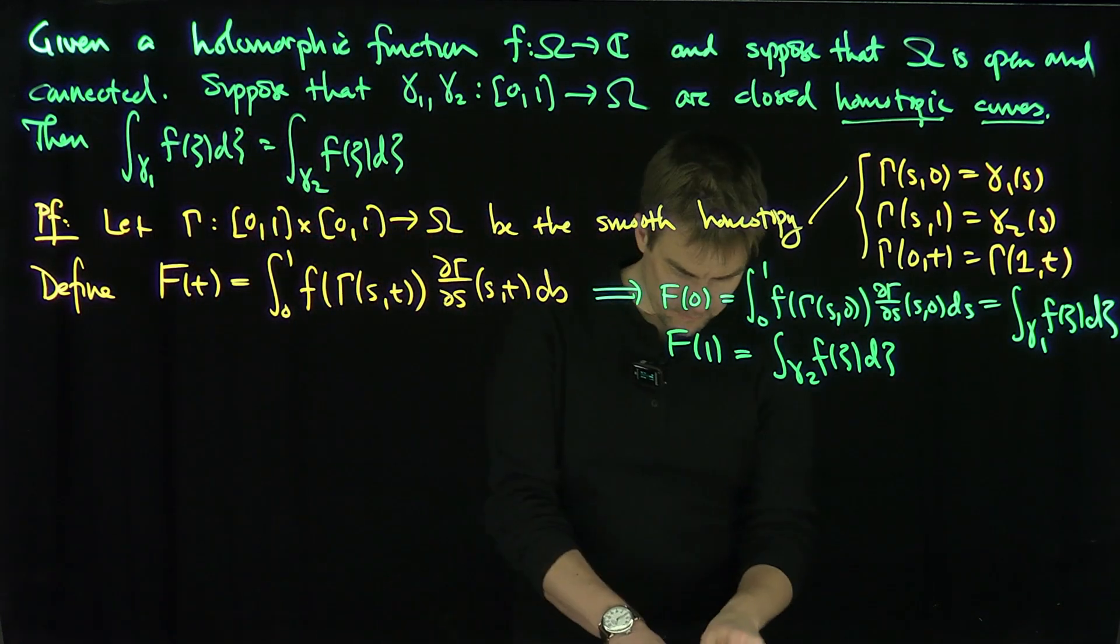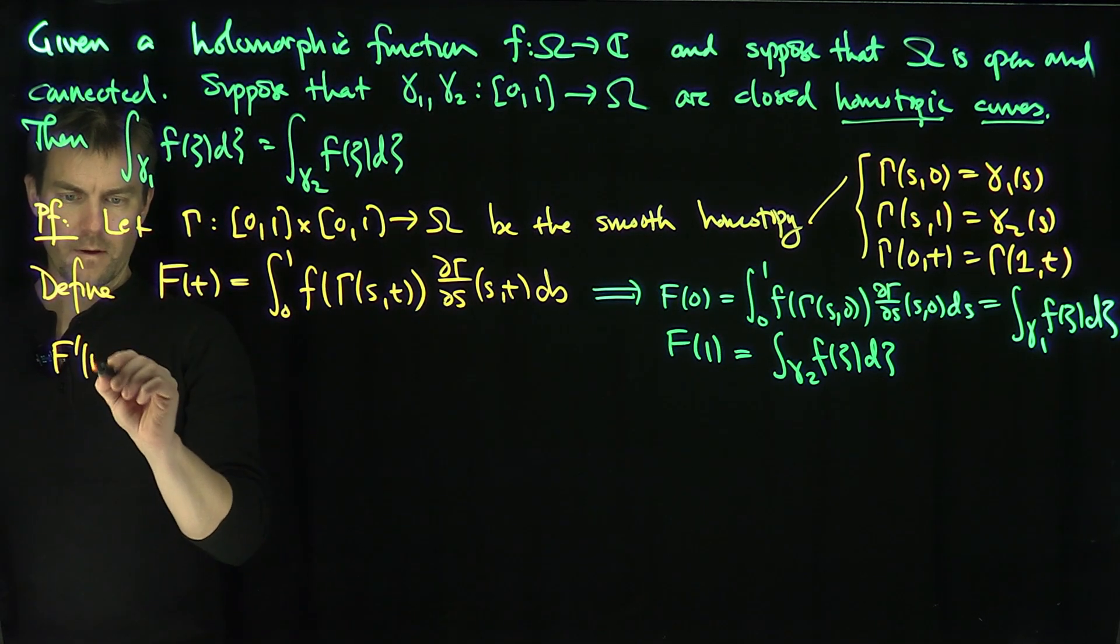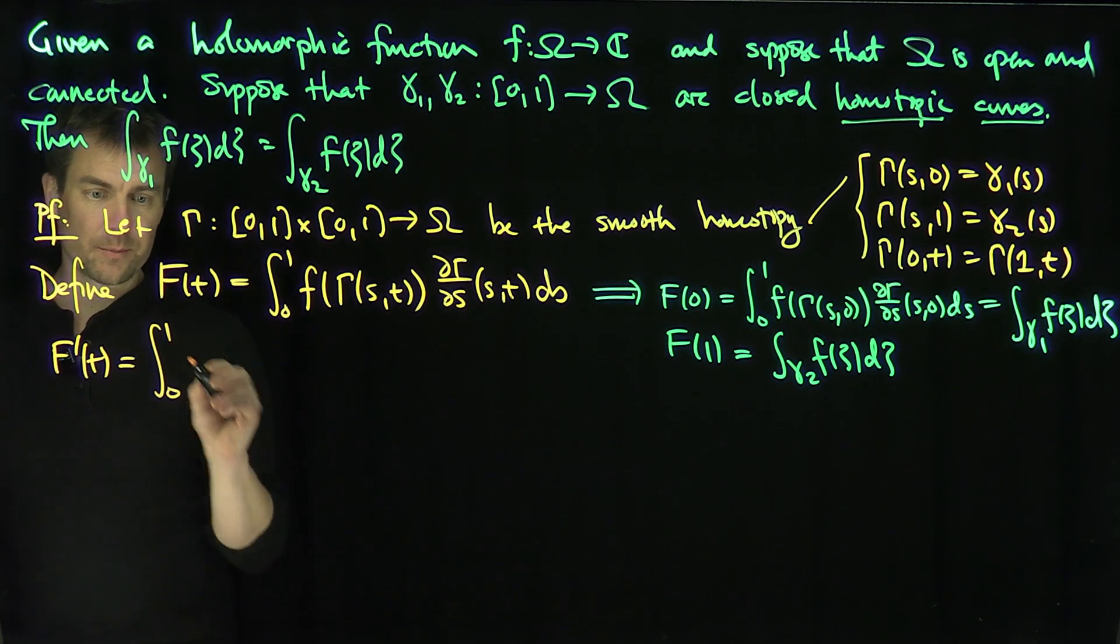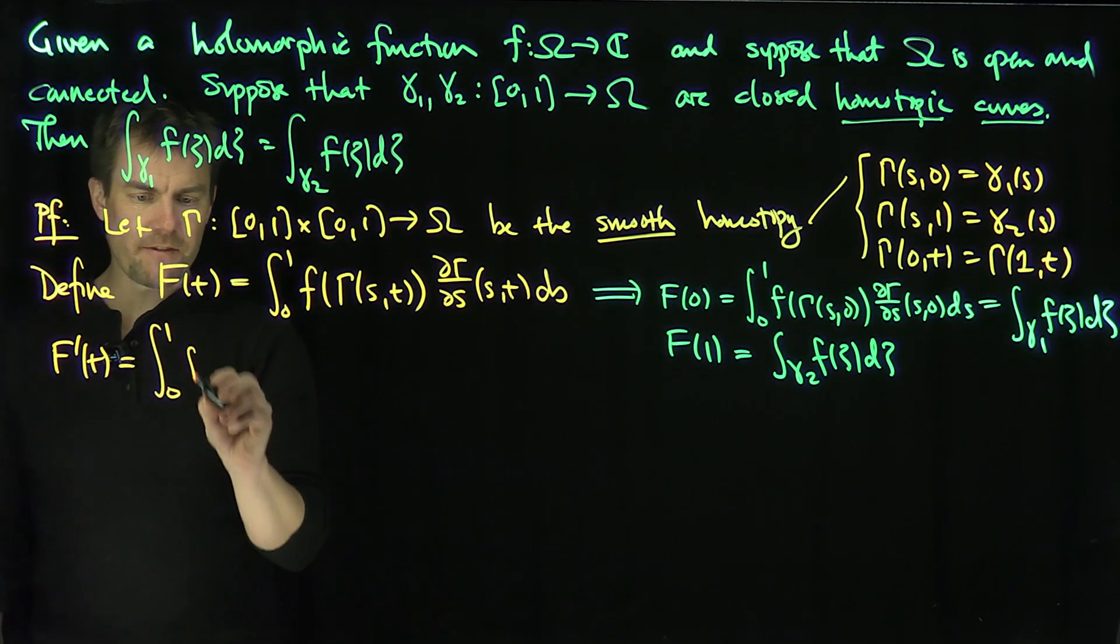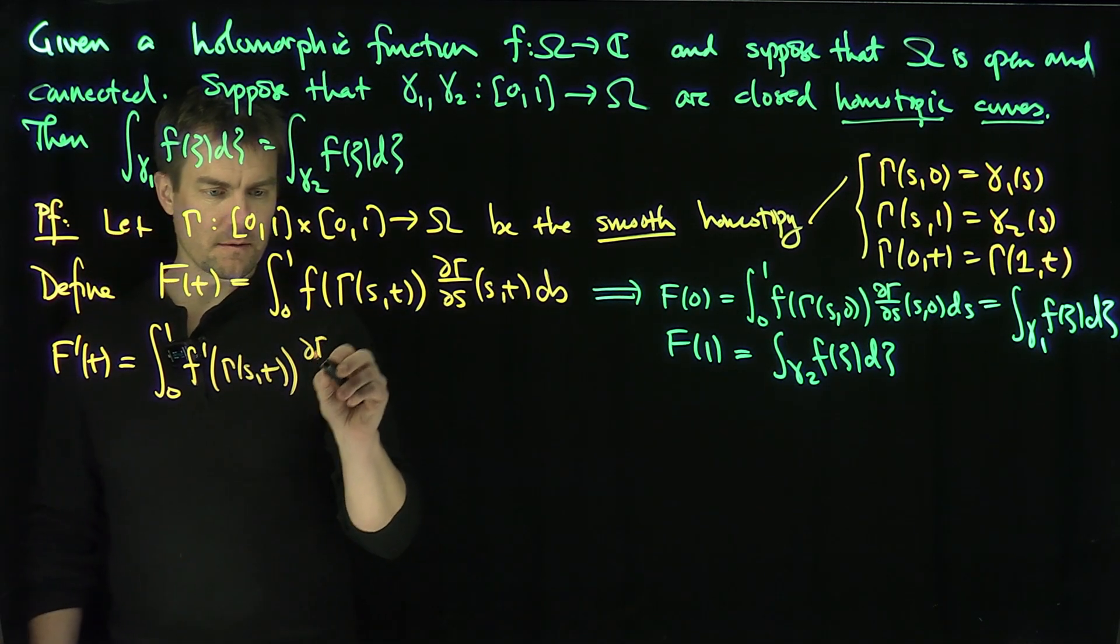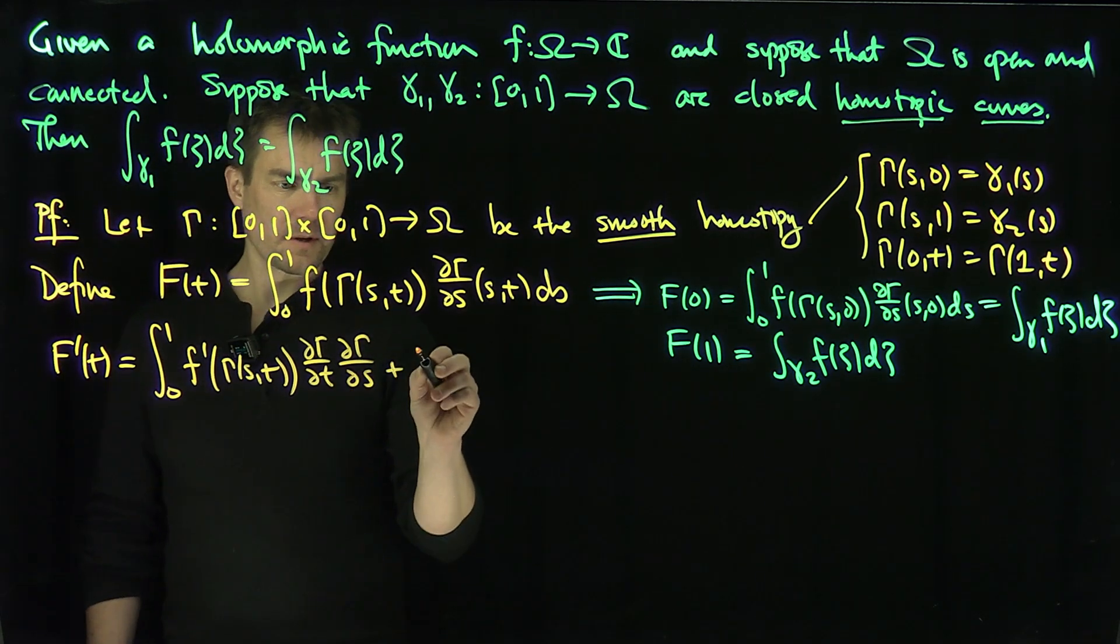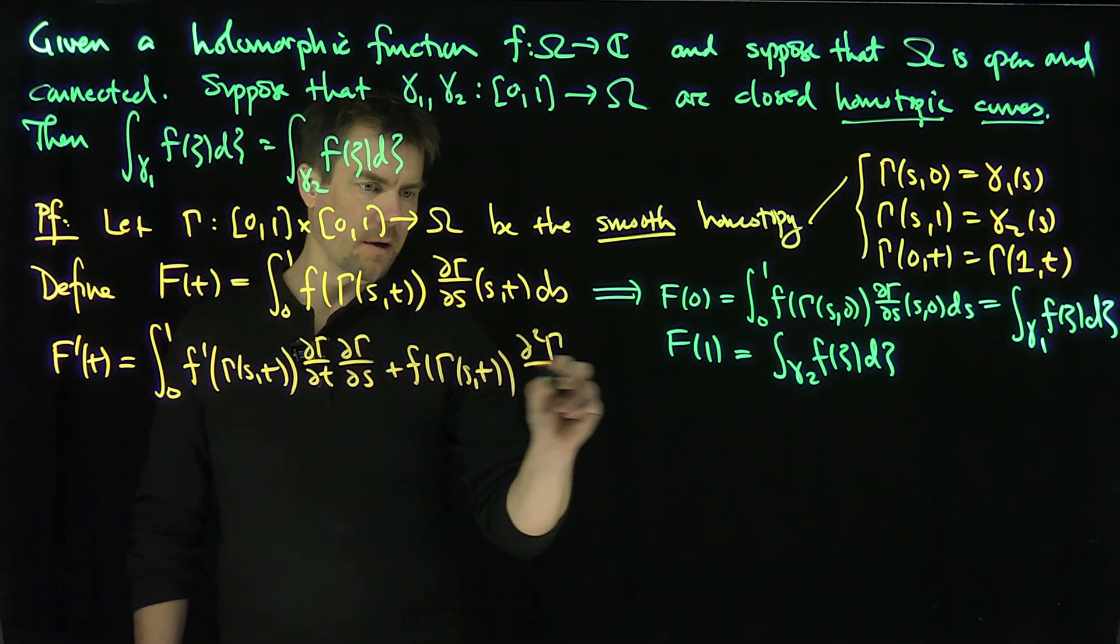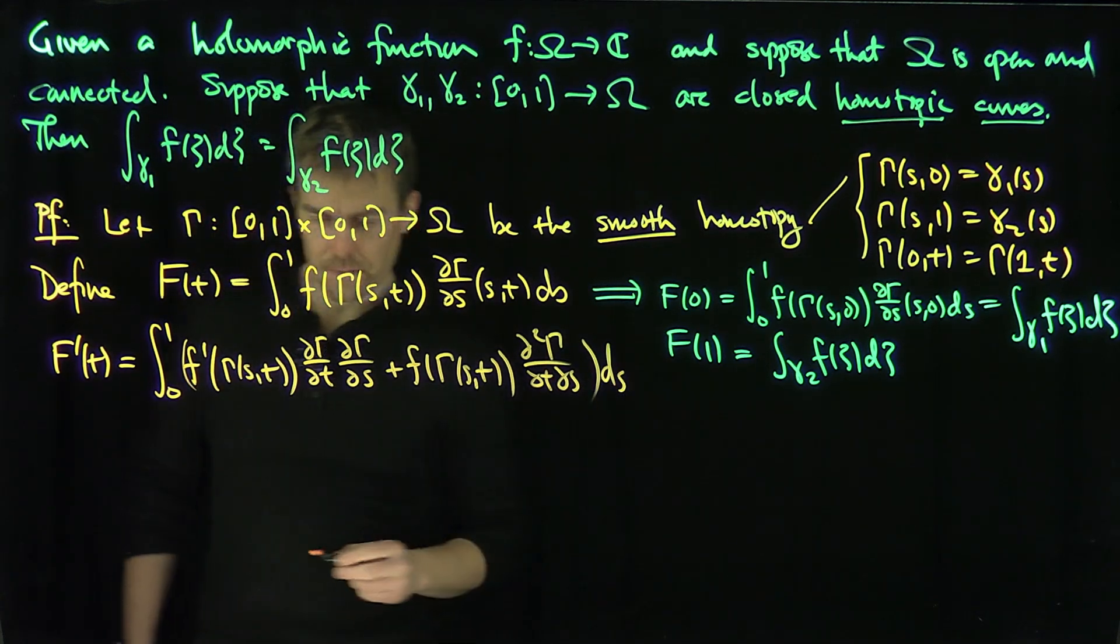Now let me compute the derivative of F. F prime of T is what? F prime of T is going to be the integral from 0 to 1. Here I'm using the smoothness now. I'm using the fact that it's smooth, so I can use Leibniz rule, of F prime of gamma of (S,T) times d gamma dT, d gamma dS, plus F of gamma of (S,T), and then d squared gamma dT dS. And this is all a dS integral over here.